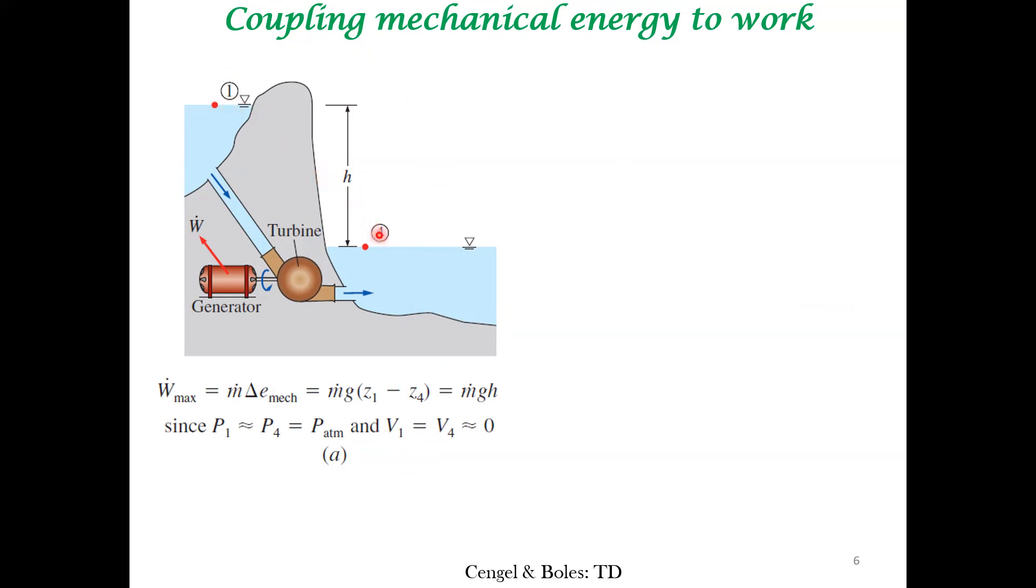When you allow this water body to go from point one to point four, there is a decrease in potential energy. This is a large water body, so the velocity at this point is negligible. Same at this point, because this is a large cross section. The kinetic energy can be neglected. Essentially, the change in potential energy is giving rise to work.